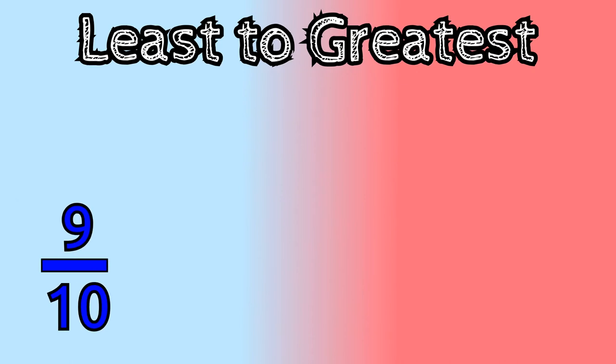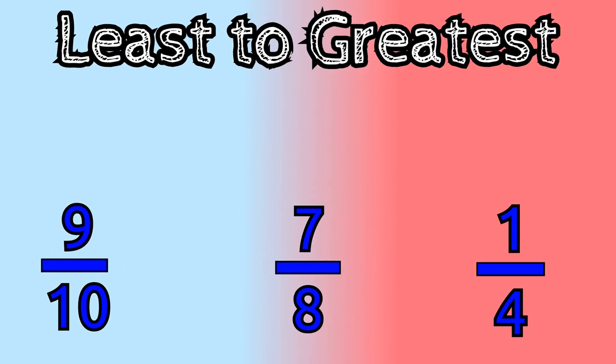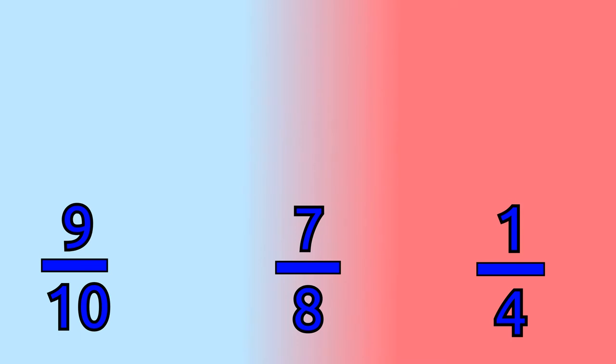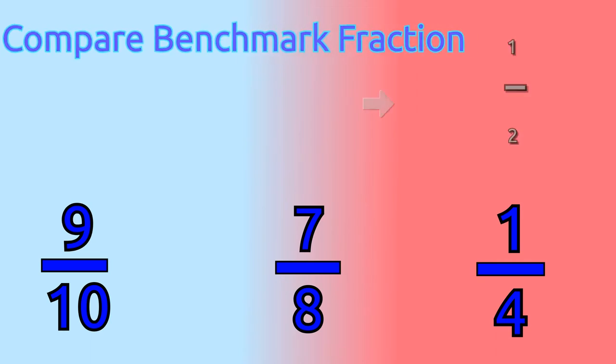Let's say you were asked to place an order from least to greatest, the fractions nine-tenths, seven-eighths, and one-fourth. We can begin by identifying the fractions with the least value by comparing them to the benchmark fraction of one-half.